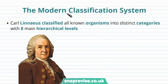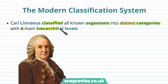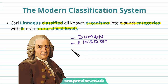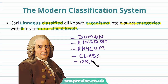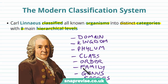So how does the modern classification system work? Scientists classified all known organisms into distinct categories, and they had eight main hierarchical levels. These levels in order are: domain, kingdom, phylum, class, order, family, genus, and species.